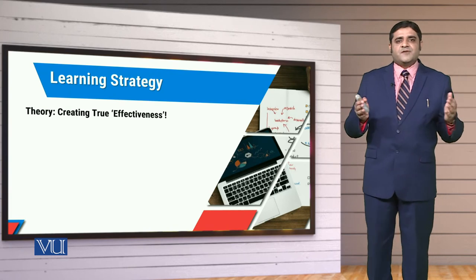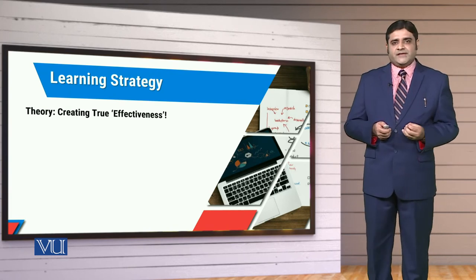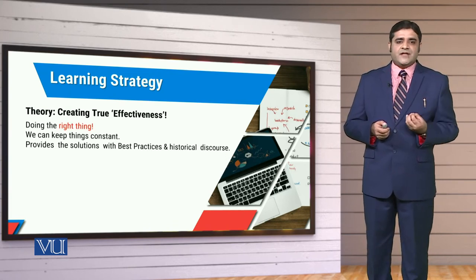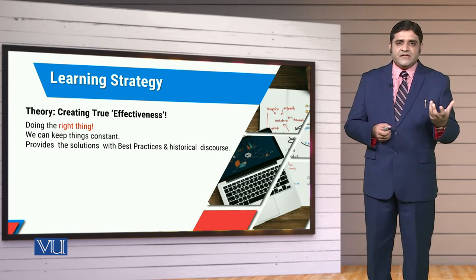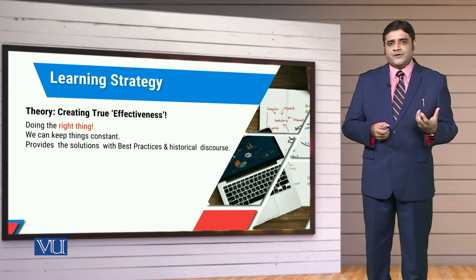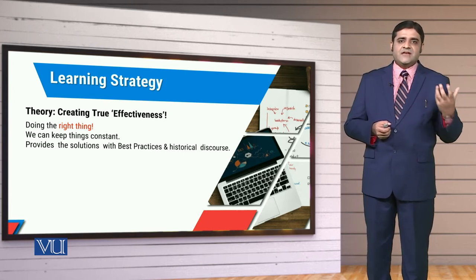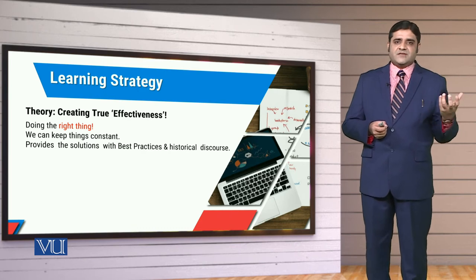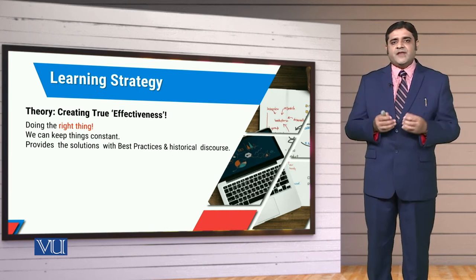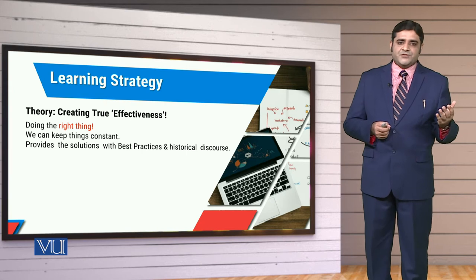In this complementary relationship, if we try to further elaborate, when we talk about theory, theory is actually related with more effectiveness. In this effectiveness, we focus on qualitative perspectives. We talk about doing the right thing — doing things which are required by the customer. So theory is actually comprehending the effectiveness side of management.